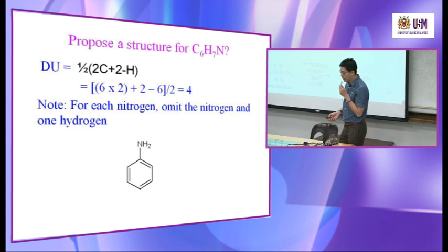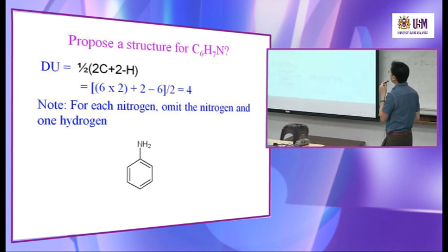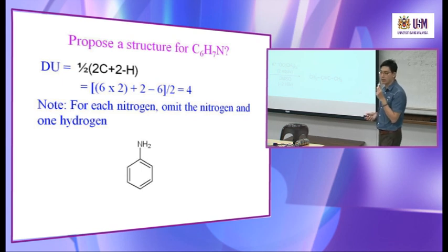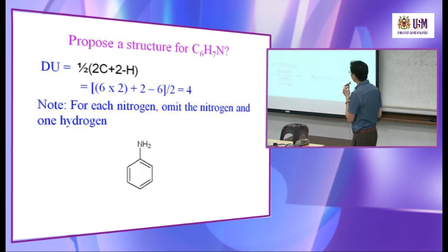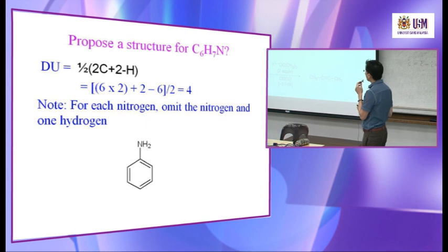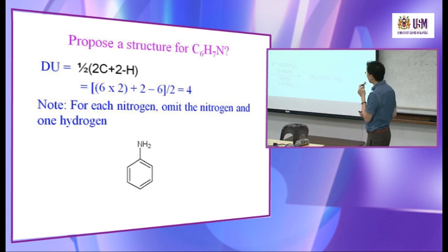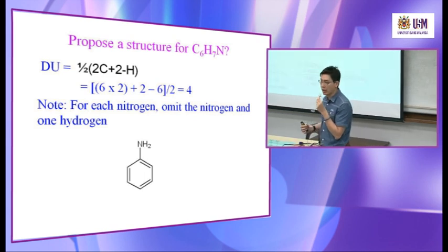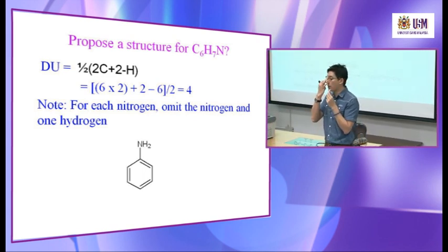How about synthesis of alkynes? As covered before, using a geminal or vicinal dihalide with sodium amide (a strong base) — two equivalents are needed. Elimination removes one H and one Cl to form a double bond, then removes another H and Cl to form a triple bond. The first step occurs quickly, but the second step — removing H from vinyl halide — requires more energy because alkene is more stable.